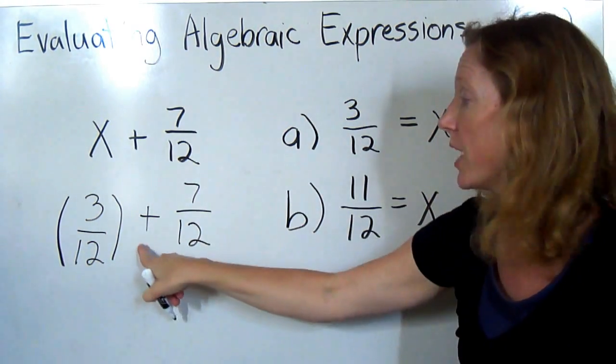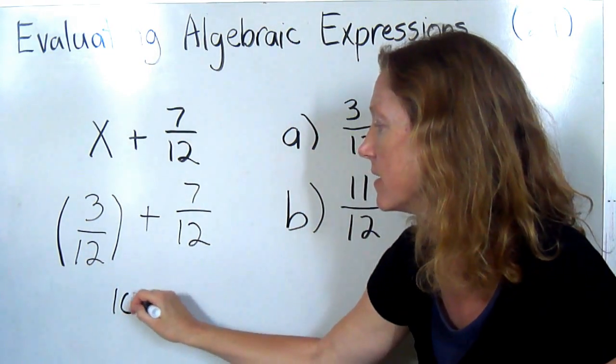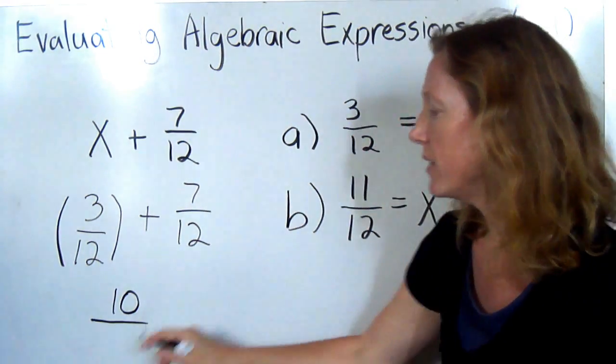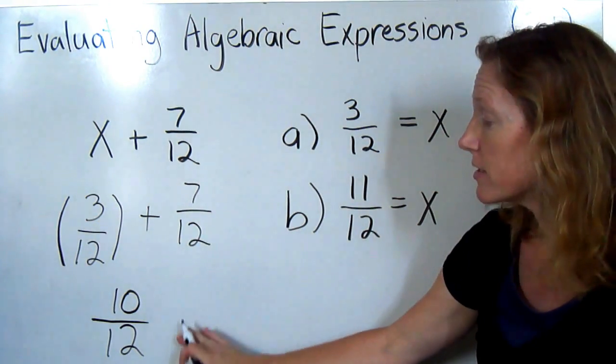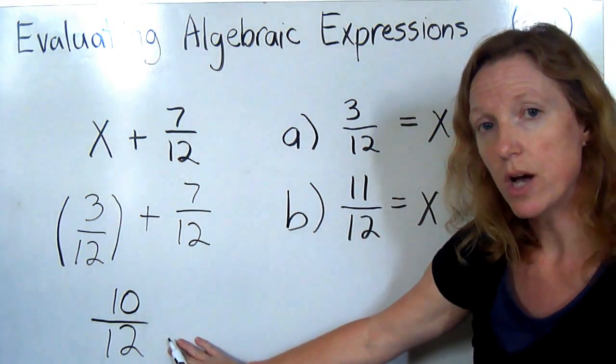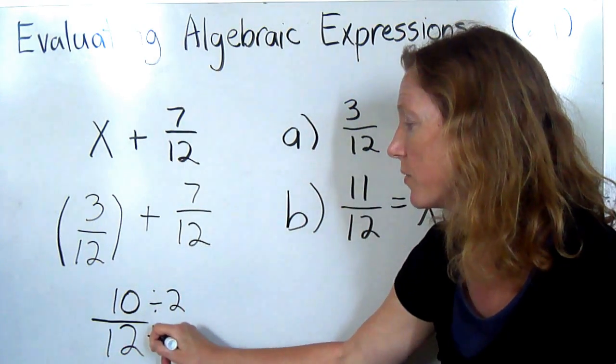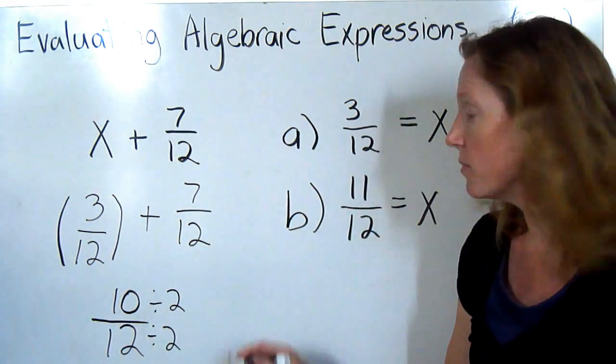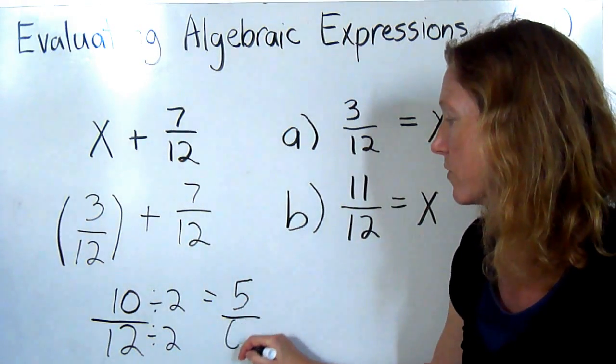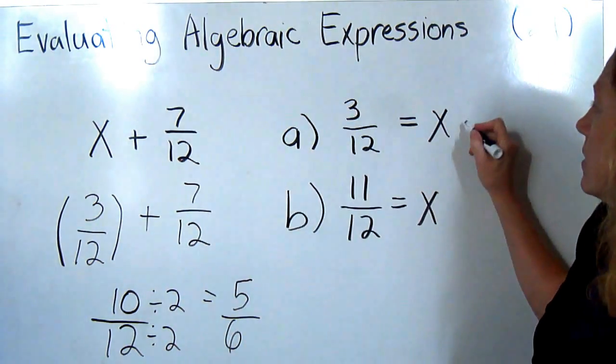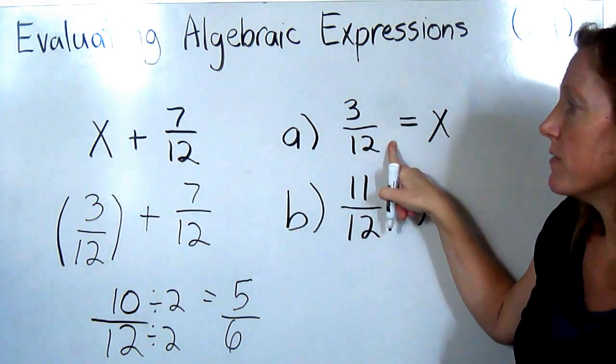Now I'm going to perform the operation. I'm adding 3 plus 7 is 10, and the denominator will remain the same. So I have 10 twelfths. Now I could also simplify, because 10 and 12 have a common factor of 2. So we'll divide both the numerator and the denominator by 2, and we'll have 5 over 6. So that's the answer for the first value of x at 3 twelfths.